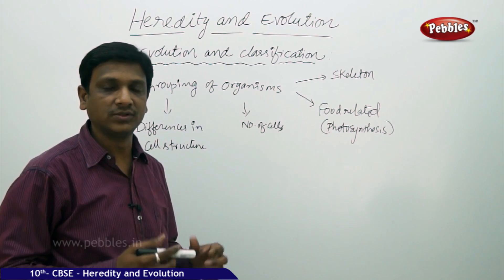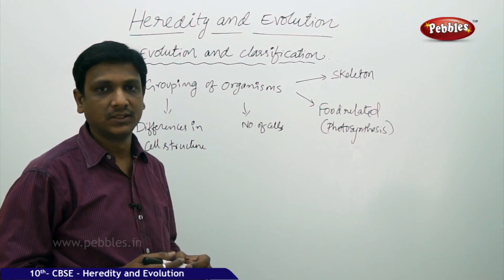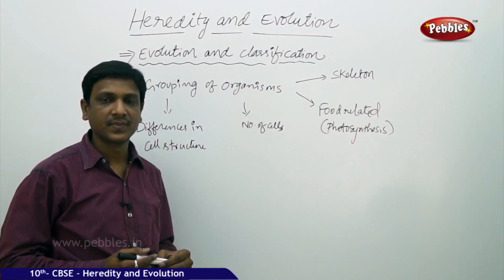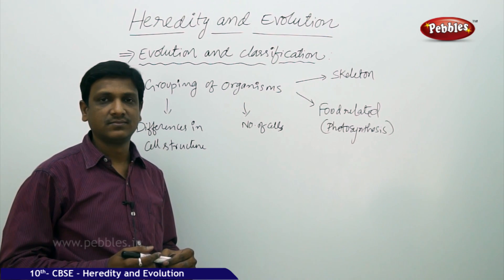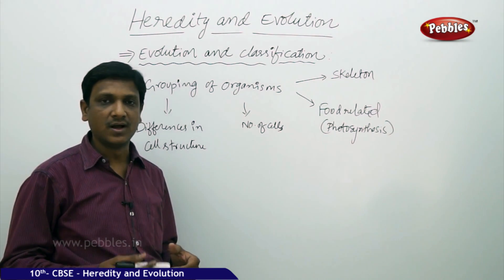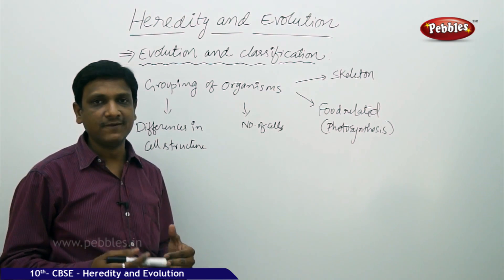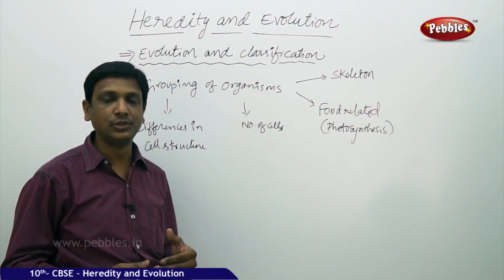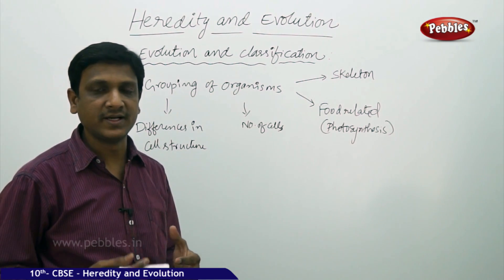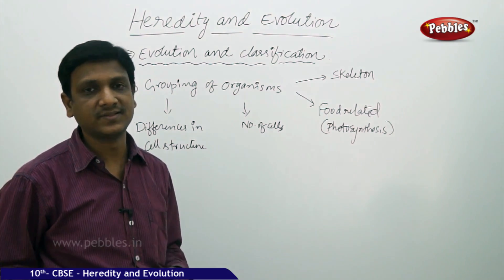Sometimes speciation happens because of natural selection — variations that help organisms adapt to changes in the environment. This leads to the survival of organisms. Sometimes, accidentally, certain organisms may be isolated or join some other group and continue their progeny there. After a long period, if brought back to the original group, they may not be able to reproduce with the original members, showing that variations have accumulated significantly, making it a new species.